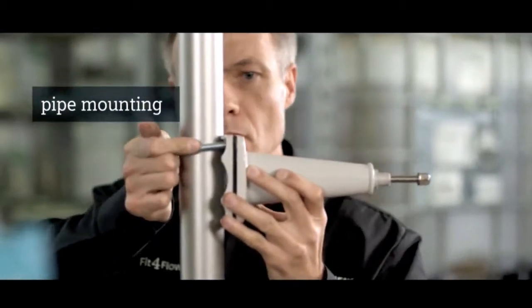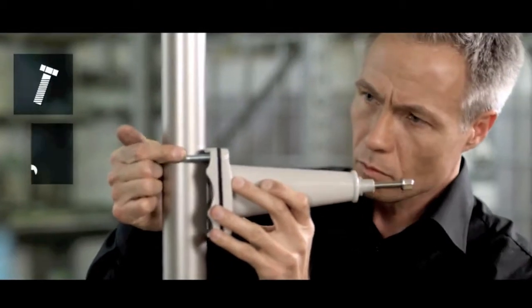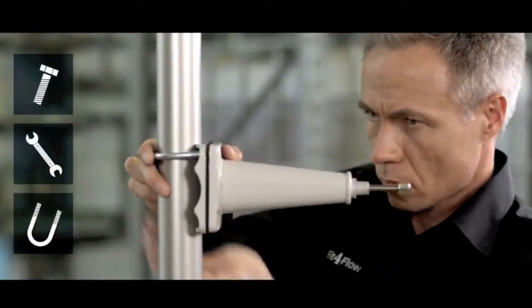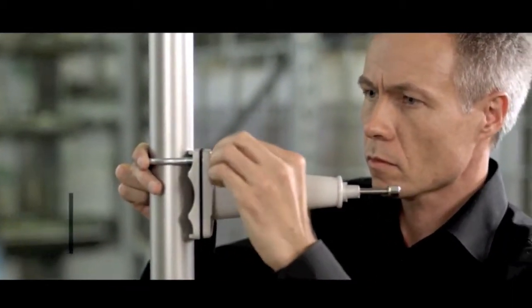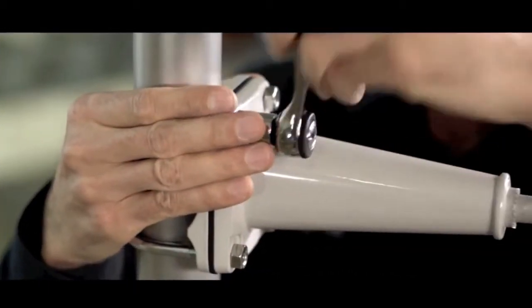To mount the transmitter on a pipe, the bracket and the cushion pad are installed with u-bolts and the supplied pipe adapter. Fasten everything together firmly.